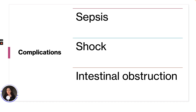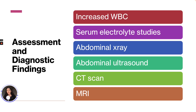Complications that can occur include sepsis, which is the major cause of death from peritonitis; shock, which can result from sepsis or hypovolemia; and intestinal obstruction. The inflammatory process may cause intestinal obstruction, primarily from the development of bowel adhesions.